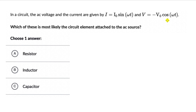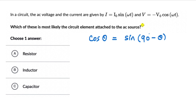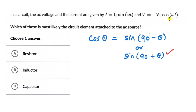Since the current is given in sine, let's convert the voltage function to sine as well. The voltage is −V₀cos(ωt). Using the identity cos θ = sin(90° + θ), we get cos(ωt) = sin(90° + ωt), so the voltage becomes −V₀sin(ωt + 90°).